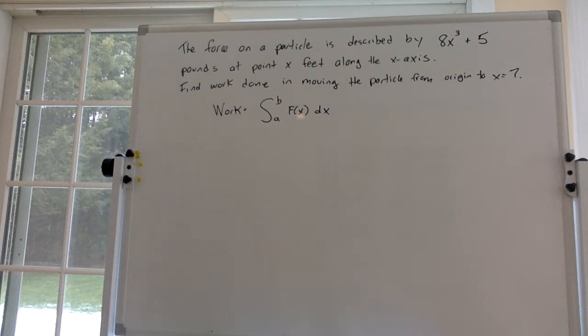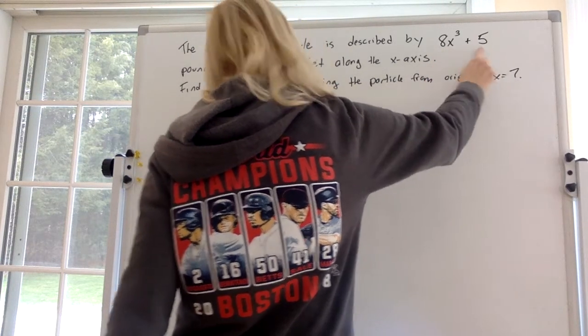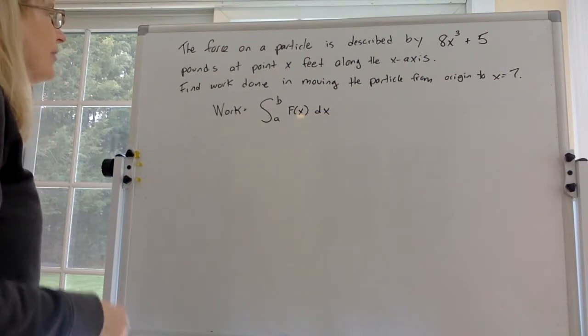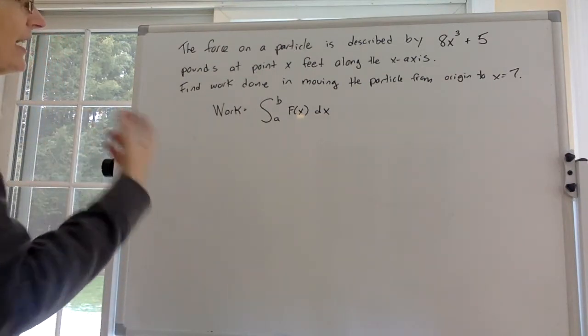Okay, in this problem they tell us that the force on a particle is described by 8x cubed plus 5 pounds at point x feet along the x-axis. So they're asserting this force on this particle. This is what the force is described as. Find the amount of work done in moving the particle from the origin to x equals 7.